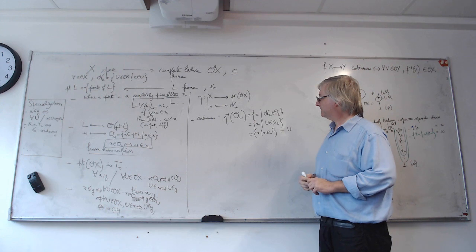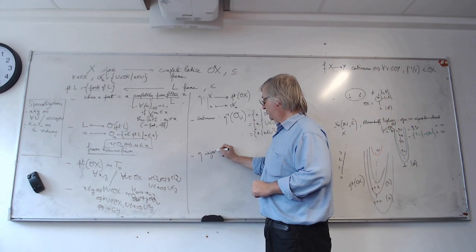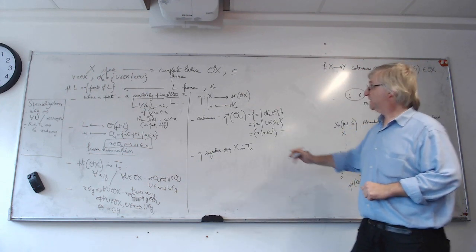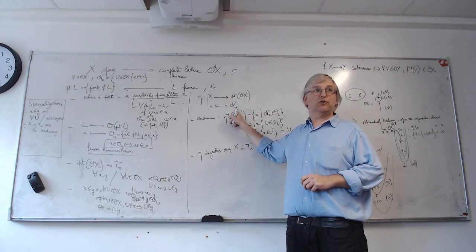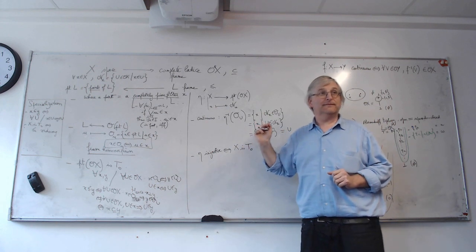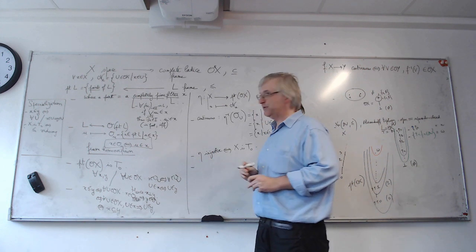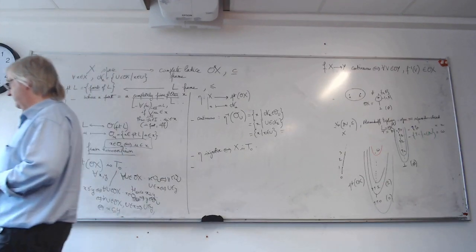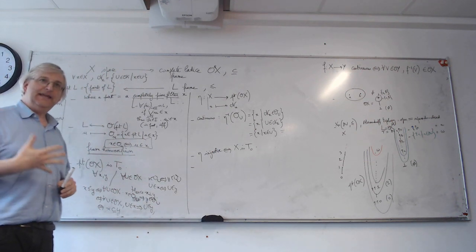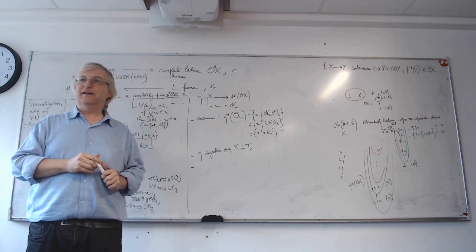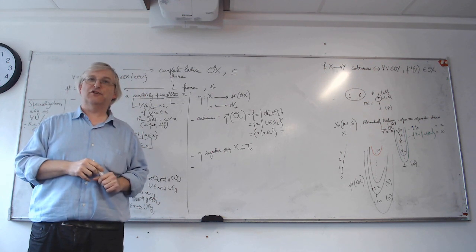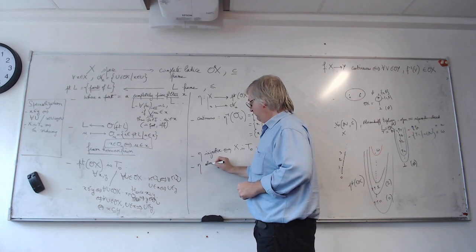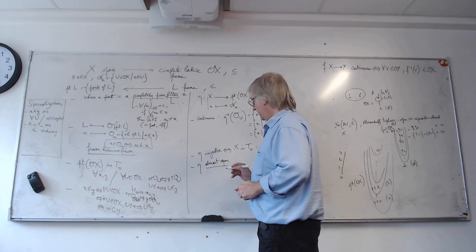Eta has more properties. For example, it is injective if and only if x is T0 — injective means if you take any two points with the same set of open neighborhoods then these two points are equal. And it has another property which I gave a name to in my book, though I'm not particularly happy with that name. I'm going to say that eta is almost open.